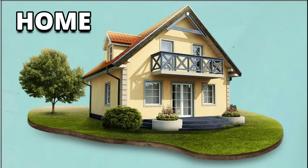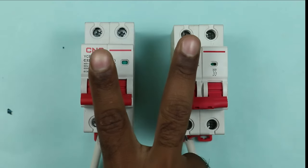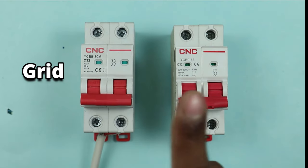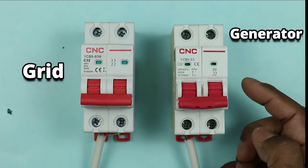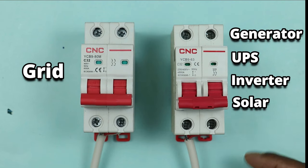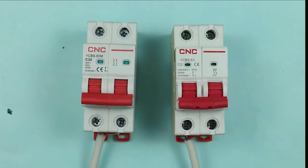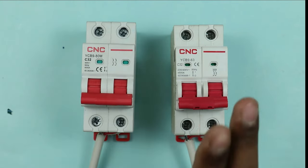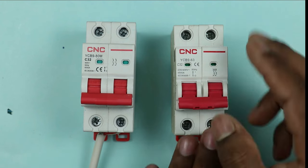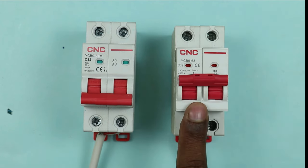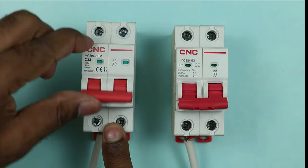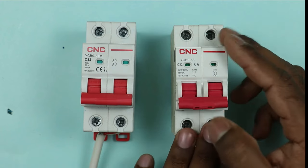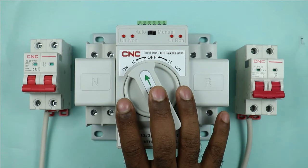If in your home, office, or company, two different types of power supply are used — one is your main power supply and another is supplied by generator, UPS, inverter, or solar panel. Suppose power is currently supplied through main power supply. If this main power supply fails, another power supply needs to be used. Right now, I am using an MCB so changeover is taking place manually. But if you want this changeover to take place automatically, you have to use this auto changeover switch.